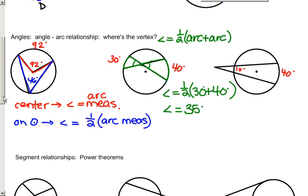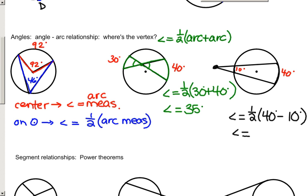The last case is when the vertex is outside the circle. You again have two intercepted arcs, but this time the measure of the angle is half the difference of the intercepted arcs. So the angle measure would be one-half of 40 minus 10. The angle measure formed by the intersecting secants would be one-half of 40 minus 10, or 15 degrees.